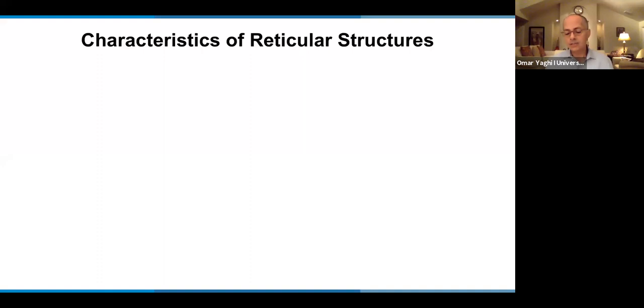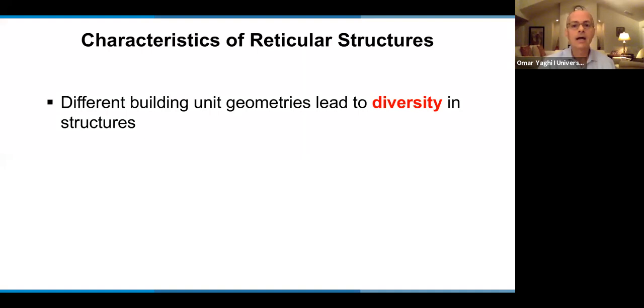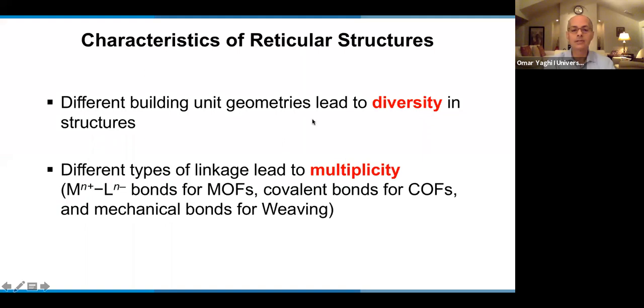So what are some of the important characteristics of the reticular structures, what the reticular structures have done for us. And by putting different building units together, different unit geometries, we have obtained a diversity of structures. So we have diversity in this chemistry, but we also have multiplicity. We obtain multiplicity by deploying different types of linkage. So for example, for MOFs, a charge linker linked by transition metal ion is responsible for making MOFs. Covalent bonds, such as CN bonds, CC bond, imine bonds, ethylene type of bonds to make COFs, mechanical bonds to make weaving.